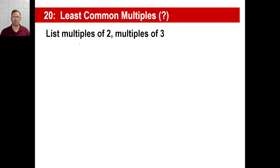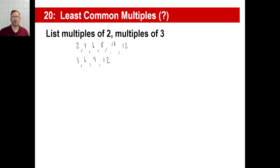Let's list some multiples of 2: 2, 4, 6, 8, 10, and so on. How about multiples of 3? 3, 6, 9, 12, and so on. If you look at this, there are some common multiples — they both have 6 in common, which is a multiple of both 2 and 3. They both have 12 in common too, which is also a multiple of 2 and 3.